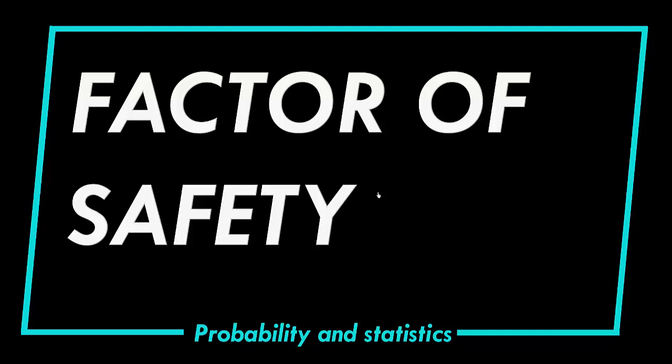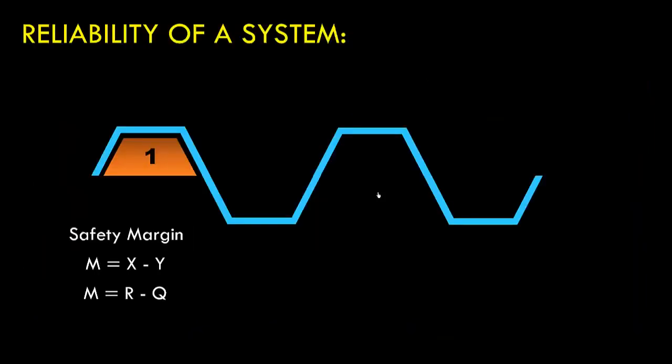Hello friends. In this video we will learn how to calculate the factor of safety of a degrading system. In the last videos we discussed about safety margin, where safety margin M is given in terms of the capacity of the system, that is the resistance provided by the system, and the demand, that is the load coming to the system.